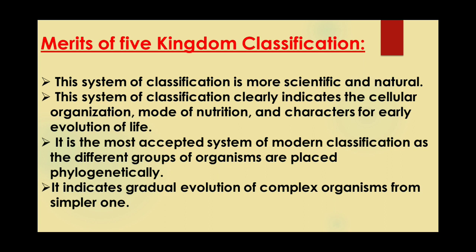The merits of five kingdom classification: this system is more scientific and natural. It clearly indicates cellular organization, mode of nutrition, and characters for early evolution of life. It is the most accepted system of modern classification as different groups of organisms are placed phylogenetically — genetically related groups arranged in a hierarchical manner. It indicates the gradual evolution of complex organisms from simpler ones.